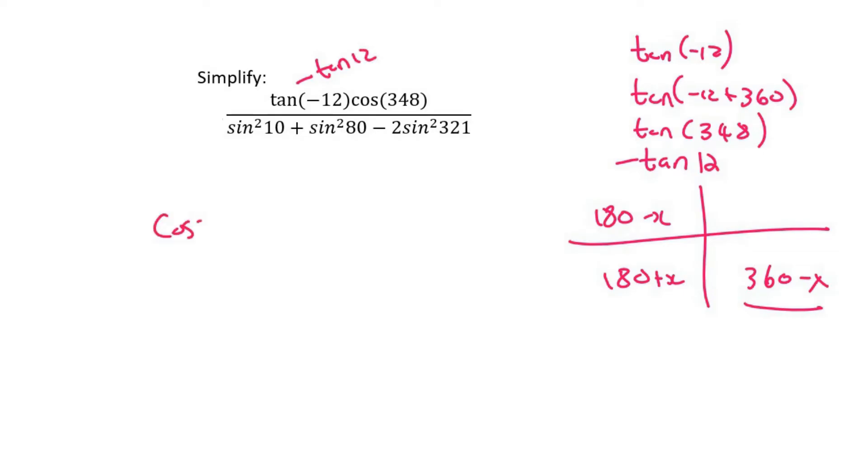Next one is cos 348. And so if you had to do reduction, that would be cos 12. And cos is positive in that quadrant, so it'll just be positive cos 12.